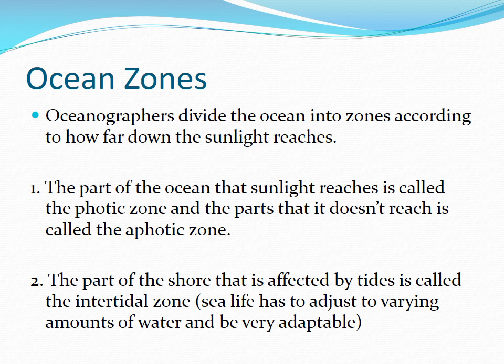Hi guys, welcome to your lesson on ocean zones. Oceanographers are scientists who study the ocean and they have divided the ocean up into zones according to how far down the sunlight reaches. Zones, another word for zones is sections. The part of the ocean that sunlight reaches is called the photic zone, and the part it doesn't reach is called the aphotic zone. Whenever you have the letter 'a' in front of a word it usually means 'not,' so aphotic means no light.